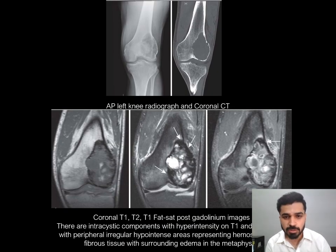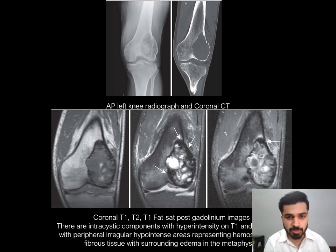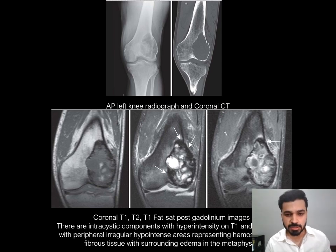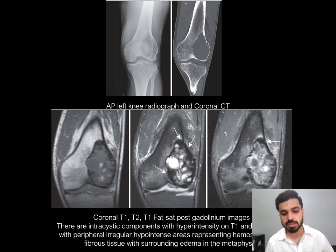This slide shows a GCT occurring at its most common location, with a radiograph, CT image, and MRI for the same case. In the AP radiograph of the left knee, a large lytic lesion is seen in the lateral compartment of the distal femur showing geographic pattern of destruction, and a small pathological fracture which is more easily appreciated on the CT image. The coronal T1, T2, and T1 post-gadolinium fat-sat images show large intra-cystic components with hyperintensity on T1 and T2, with peripheral irregular hypointensity areas representing hemosiderin and fibrous tissue with surrounding edema in the metaphysis.